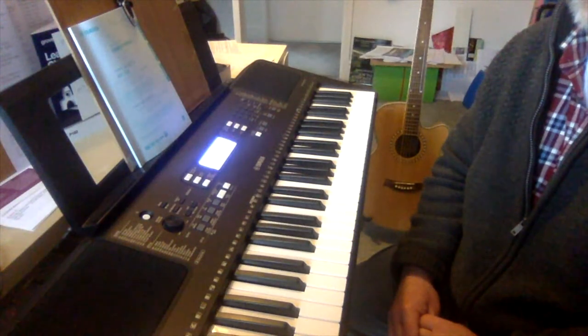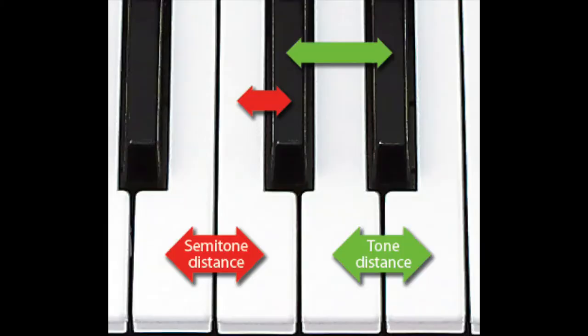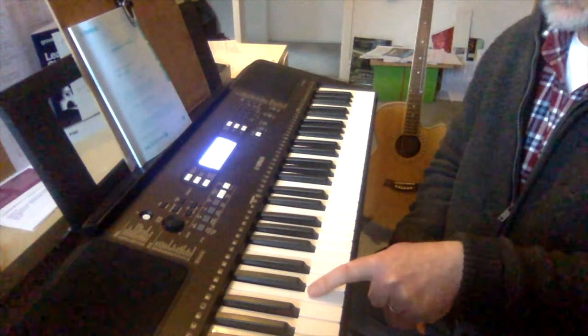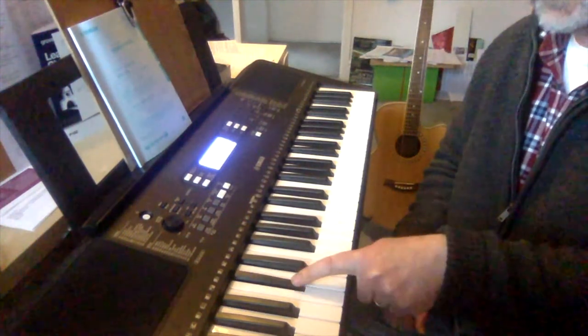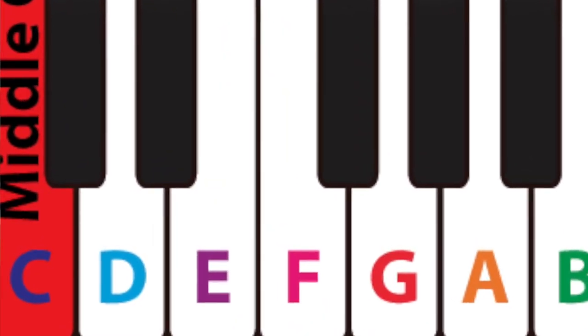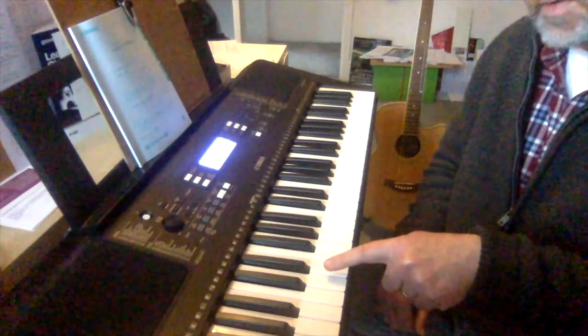So semitones and tones — the nuts and bolts. Keyboards as a machine think in semitones. A semitone is the smallest interval — the smallest distance between any two notes on the keyboard, piano, or violin, although you can do microtones on a violin. C to C sharp is a semitone. C sharp to D is a semitone. So C to D consists of two semitones, making it a tone or whole tone, and it doesn't matter whether you're going up or down.